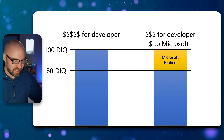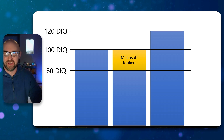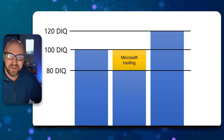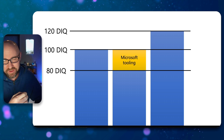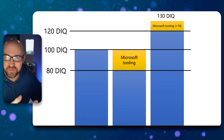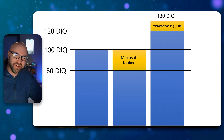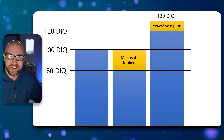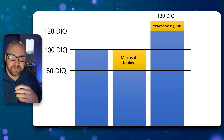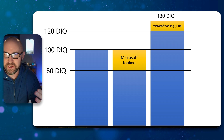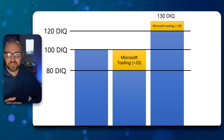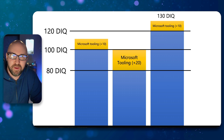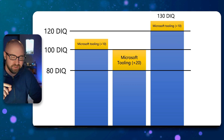Now, that's very pessimistic. What if your baseline DIQ is 120 — pretty good? You've all met these developers; they're really, really good. Even with the law of diminishing returns, they still use Microsoft tooling and become slightly more productive. However, if you're already above average, the tooling doesn't make a massive difference. If you're below average the tooling helps you climb the value chain significantly, but if you're already average, you only become slightly above average.